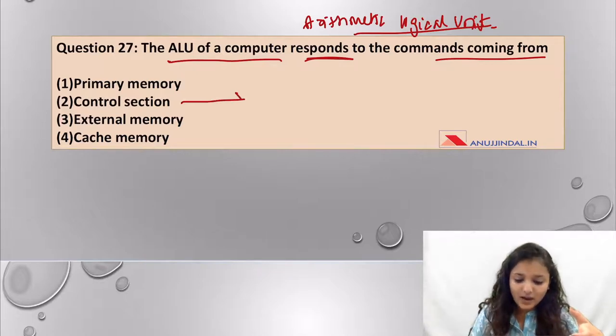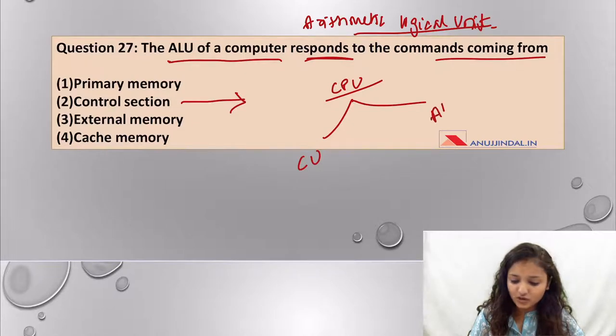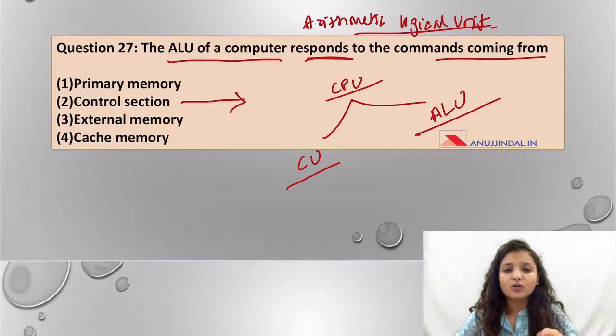Primary memory is the part which holds the data for processing. The second one is the control section. Now, CPU is the brain of the computer. CPU has two parts: one is control unit, the other is ALU unit.